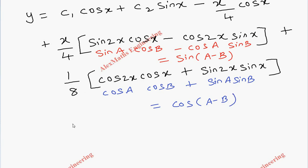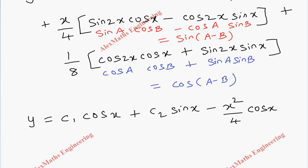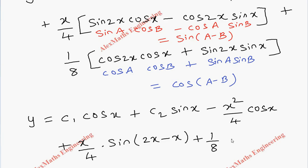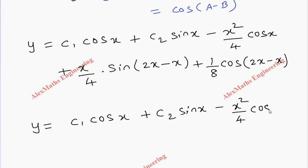So simplifying: y = c₁ cos x + c₂ sin x - x²/4 · cos x + x/4 · sin(2x - x) + 1/8 · cos(2x - x). Since 2x - x = x, this gives y = c₁ cos x + c₂ sin x - x²/4 · cos x + x/4 · sin x + 1/8 · cos x.